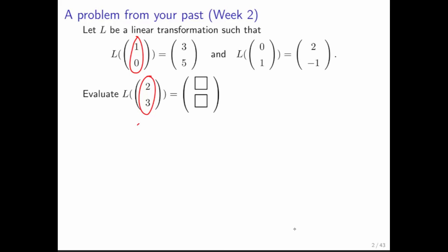In particular, what you would do is you would say, well, I know that the first column of the matrix has to be 3, 5, and the second column has to be 2, minus 1, and therefore all I need to do is multiply that times 2, 3, and when I do that I get my answer.